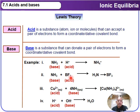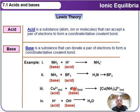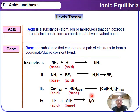NH₃ with BF₃: NH₃ has one lone pair that can be donated to BF₃ to form the NH₃·BF₃ coordinate or dative covalent bond compound. Another example: Cu²⁺ is a Lewis acid when it reacts with NH₃, because each ammonia molecule has a lone pair that can be donated to form a coordinate bond. Also, H⁺ and OH⁻ combine, where OH⁻ donates its lone pair to H⁺ to form H₂O.